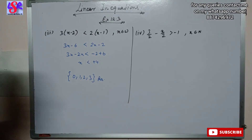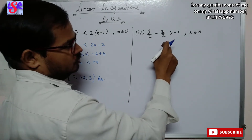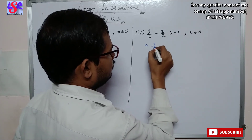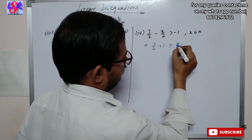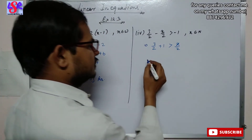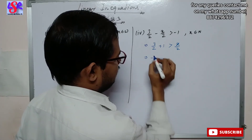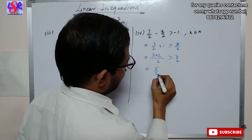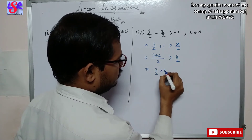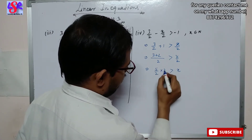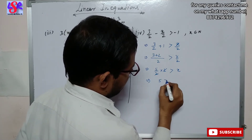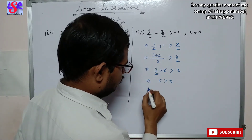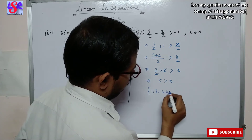Now we will be doing the fourth part. Here we have 3 upon 2 minus x upon 2 is greater than minus 1. Transposing: 3 upon 2 plus 1 is greater than x upon 2. Taking LCM of 2: 3 plus 2 upon 2 is greater than x upon 2, giving 5 upon 2 greater than x upon 2. The 2 cancels out, so 5 is greater than x, meaning x is less than 5. As x is a natural number, the answer is 1, 2, 3 and 4.